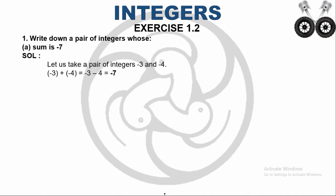We have to write 2 integers such that when we add them, the answer should be -7. For example, if I take the 2 integers as -3 and -4: minus 3 plus minus 4. Since plus and minus operators are together, I have to change the sign, so it becomes minus 3 minus 4. These 2 integers have the same sign, so I add: 3 plus 4 is 7. The biggest number has a negative sign, so the answer is -7.